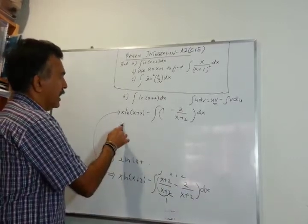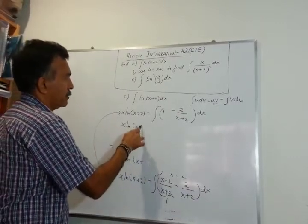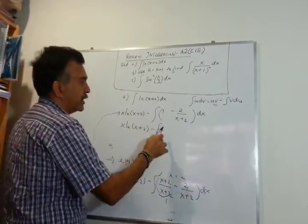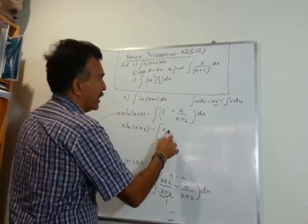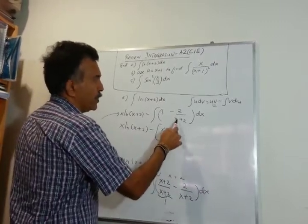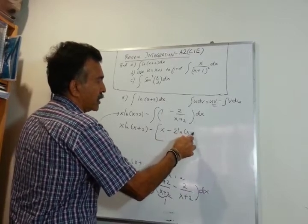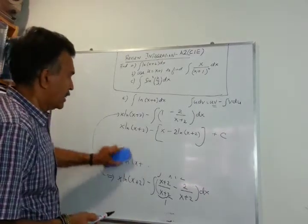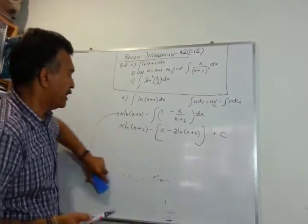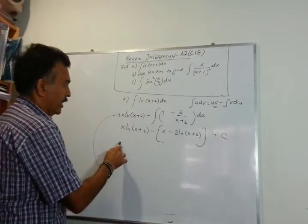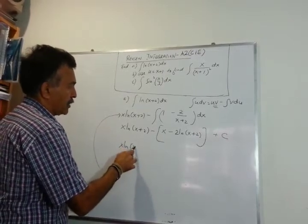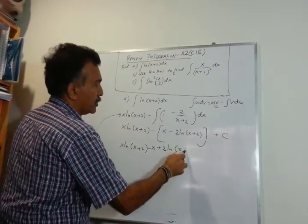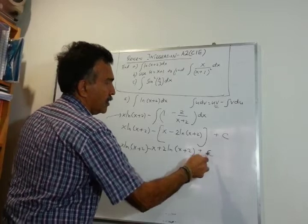So what we have is x·ln(x+2). When you integrate 1 with respect to x we get x, and integrating 2/(x+2) gives minus 2·ln(x+2). So the result is x·ln(x+2) minus x plus 2·ln(x+2) plus c.